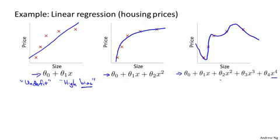On the one hand, it seems to do a very good job fitting the training set, as it passes through all of my data, but this is still a very wiggly curve, going up and down all over the place. We don't actually think that's such a good model for predicting housing prices. So this problem we call overfitting, and another term for this is that this algorithm has high variance. The term high variance is another sort of historical or technical one, but the intuition is that if we're fitting such a high order polynomial, the hypothesis can fit almost any function. The space of possible hypotheses is just too large or too variable, and we don't have enough data to constrain it to give us a good hypothesis.